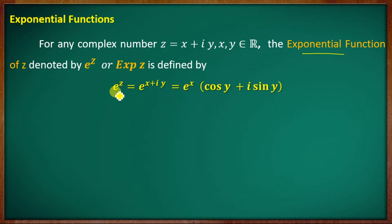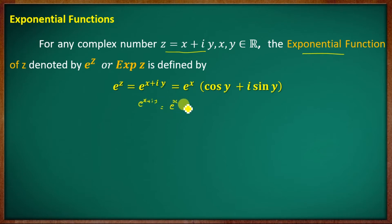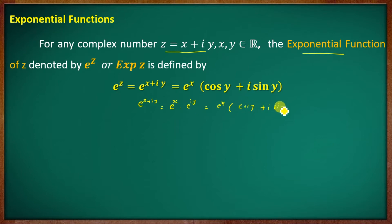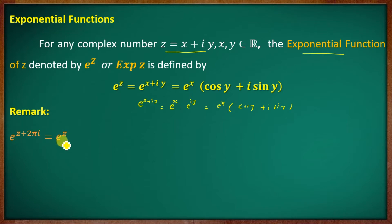We go from e raised to z, where z is x plus iy. Replacing, we get e raised to (x + iy), which equals e raised to x into e raised to iy, equal to e raised to x times (cos y plus i sin y). And that's the definition. Now the remark: e raised to (z + 2πi) equals e raised to z.